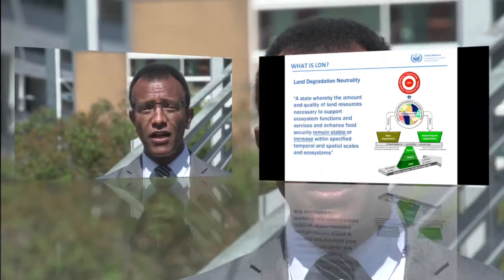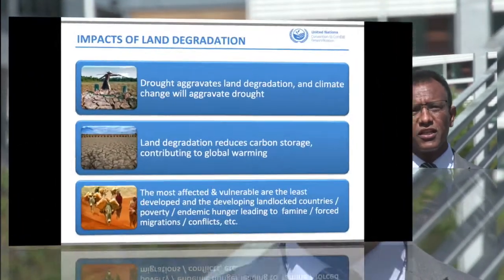When we discuss the impacts of land degradation, drought first aggravates land degradation, and climate change in return aggravates drought. Land degradation also reduces carbon storage, which contributes to global warming. The most affected and vulnerable are the least developed, underdeveloped, and developing countries.